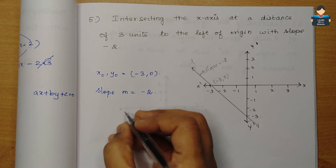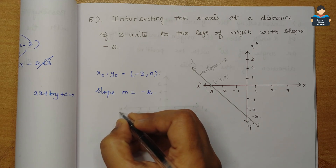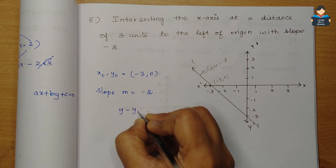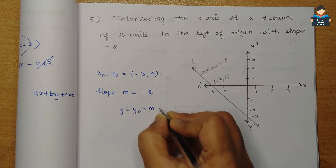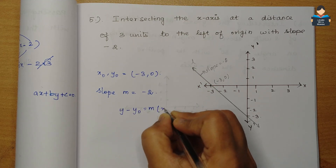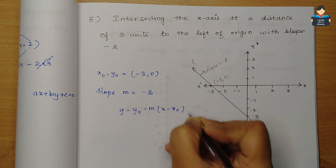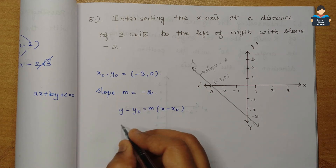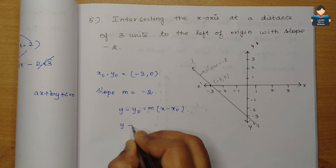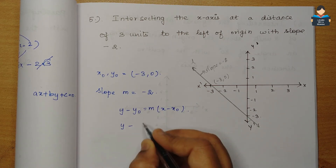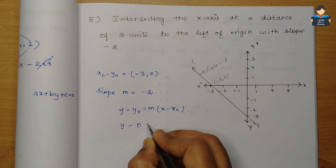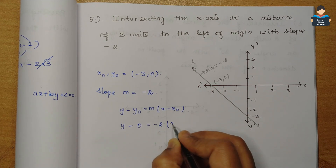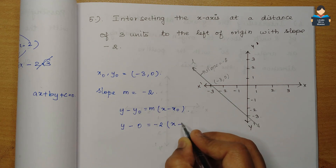Now we use the point-slope form: y minus y0 equals m into x minus x0. We substitute the values: y minus y0 equals minus 2 into x minus of minus 3.